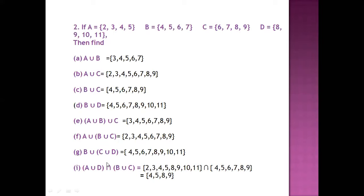Intersection will include all the common elements between these two sets. 4, 5, 8, 9 are common. So we have written {4, 5, 8, 9} as our answer.